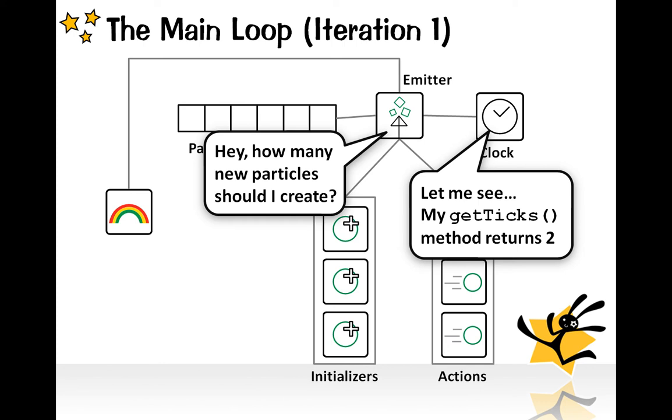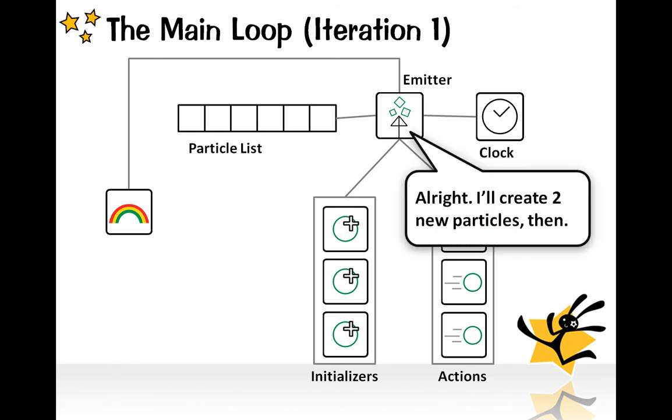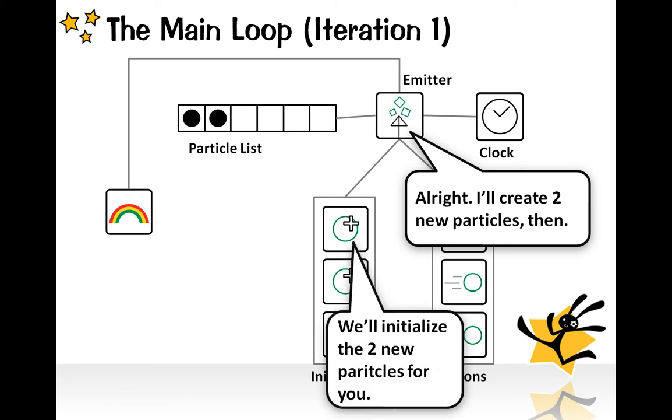This means the emitter should create two new particles in this iteration. So the emitter would create two particles. These two particles are added to the emitter's internal particle list, and the initializers would initialize the particle's properties.